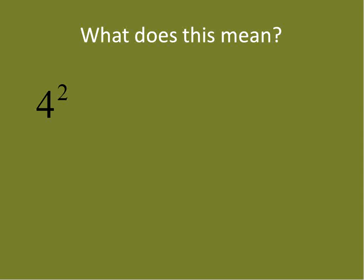Let's look at what it actually means. We're going to use a base of 4 and an exponent of 2. What it means is you take the base — in this case 4 — and multiply it times itself the exponent number of times. So 4 times itself twice: 4 times 4.